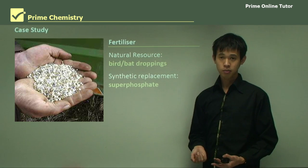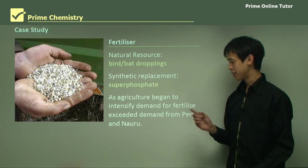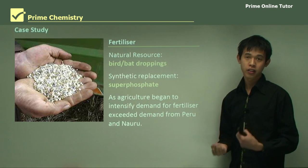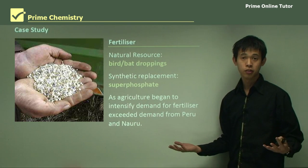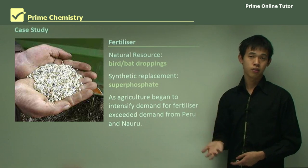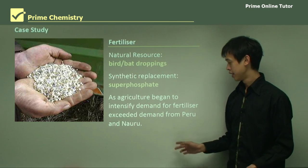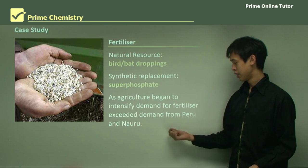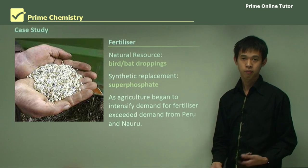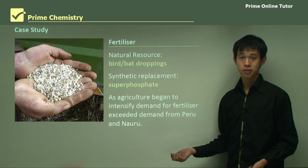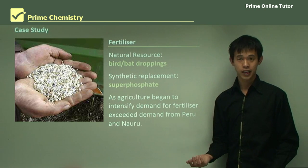A synthetic replacement was developed called superphosphate. The reason it was developed was because agriculture began to intensify — lots of people wanted to grow food, so agriculture became huge. The demand for bird and bat droppings far exceeded the supply. We originally got this natural product from Peru and Nauru, both of which were key sources of guano.